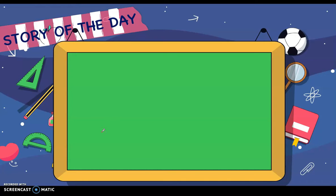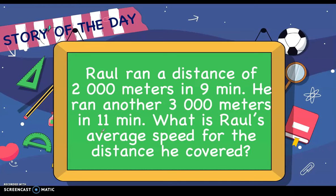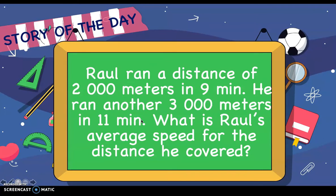Good day everyone. Let's start our lesson with a story problem. Raul ran a distance of 2,000 meters in 9 minutes. He ran another 3,000 meters in 11 minutes. What is Raul's average speed for the distance he covered? To solve this problem, let's analyze first what is asked and what are the given facts. The problem asks for the average speed, and the given values are 2,000 meters in 9 minutes and 3,000 meters in 11 minutes.